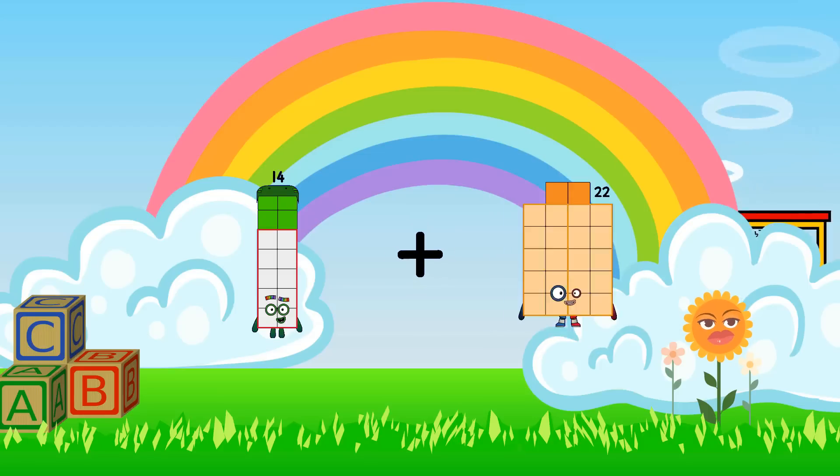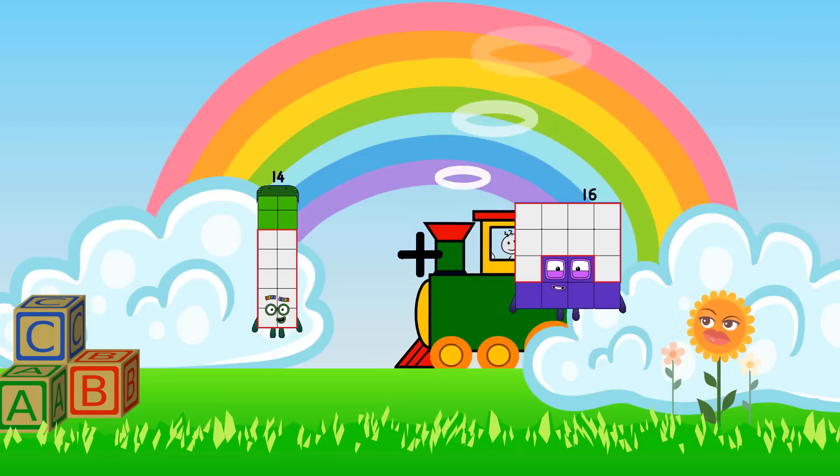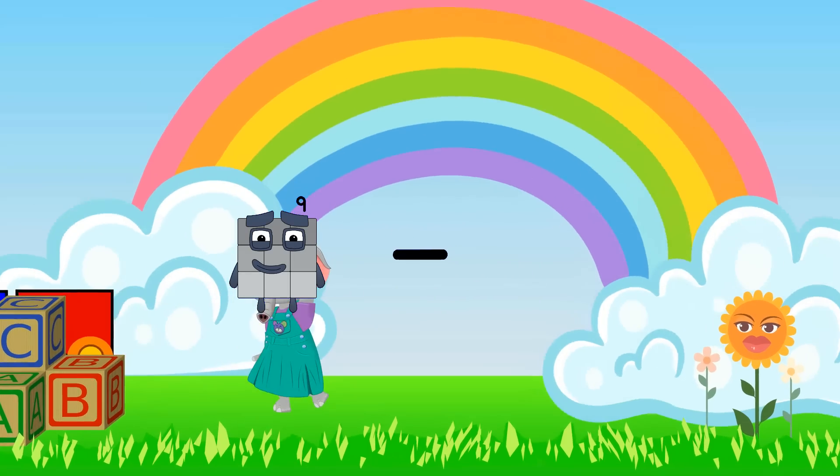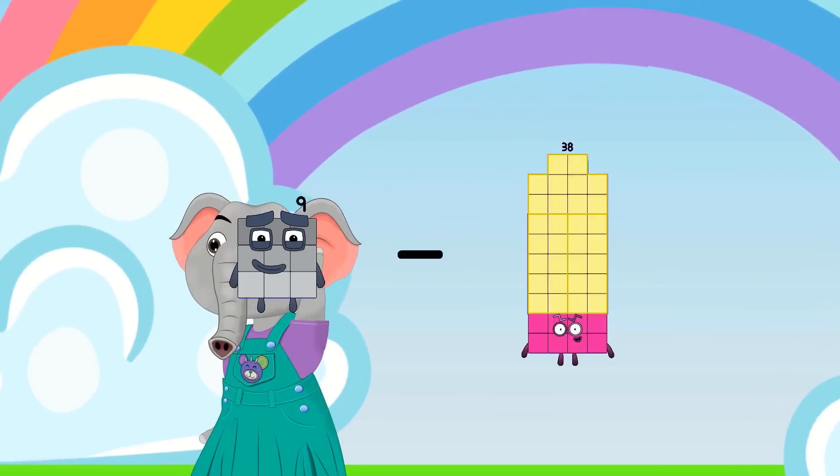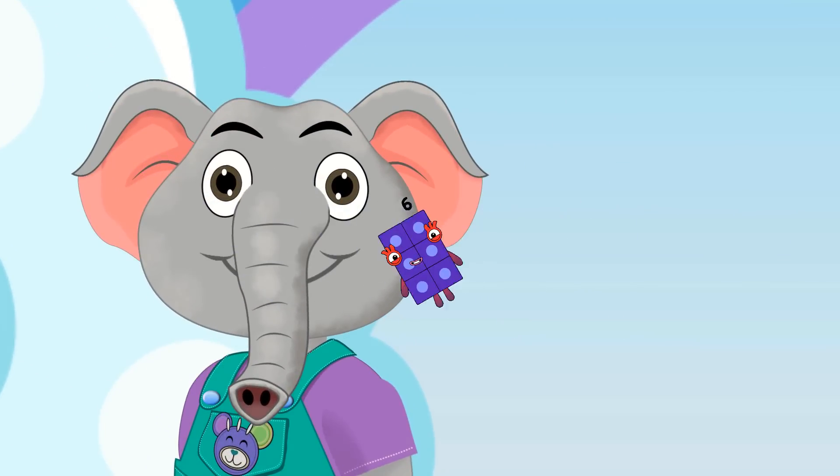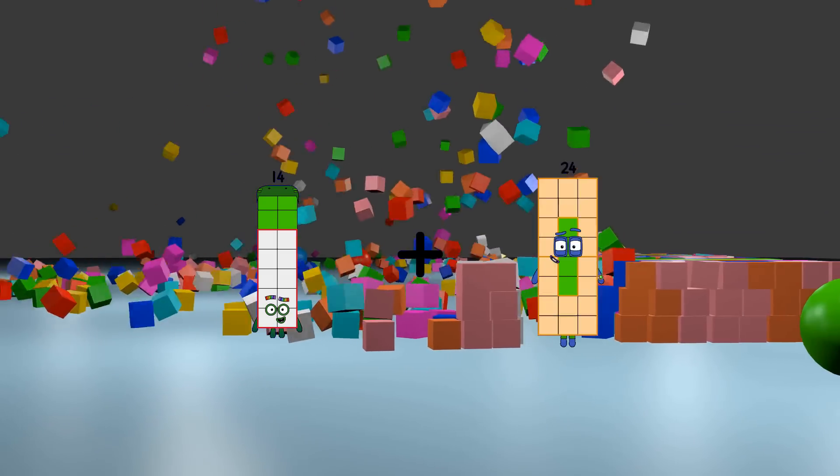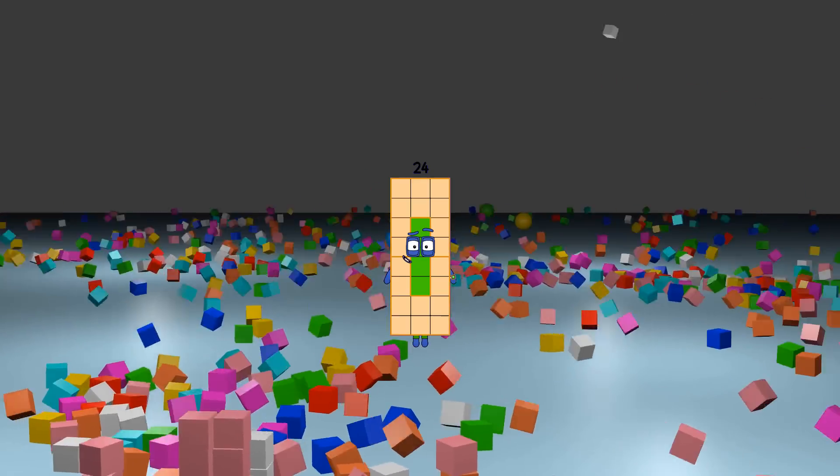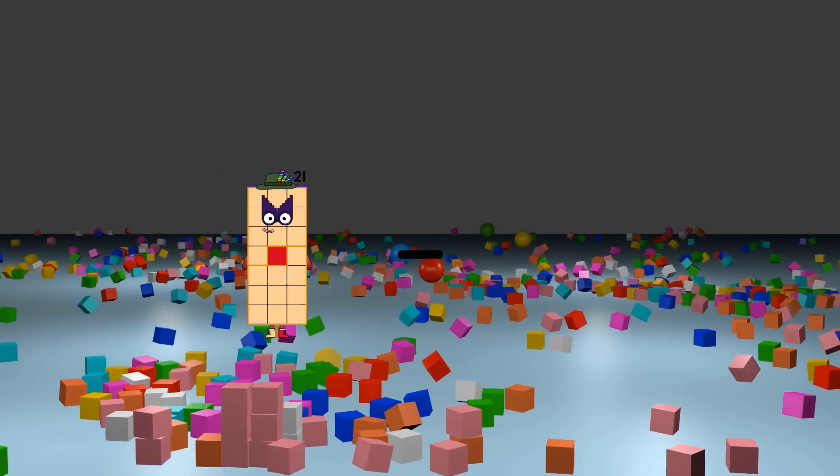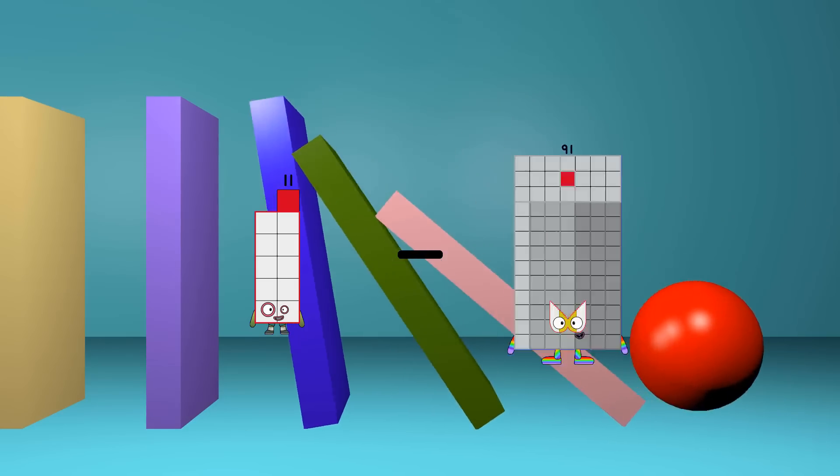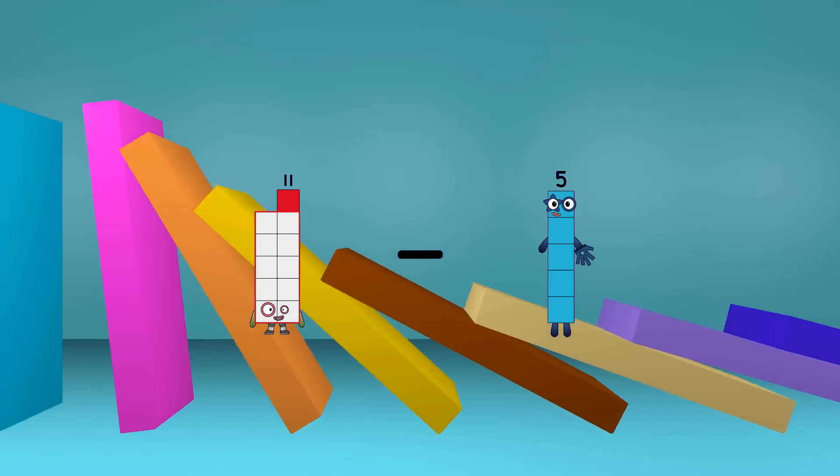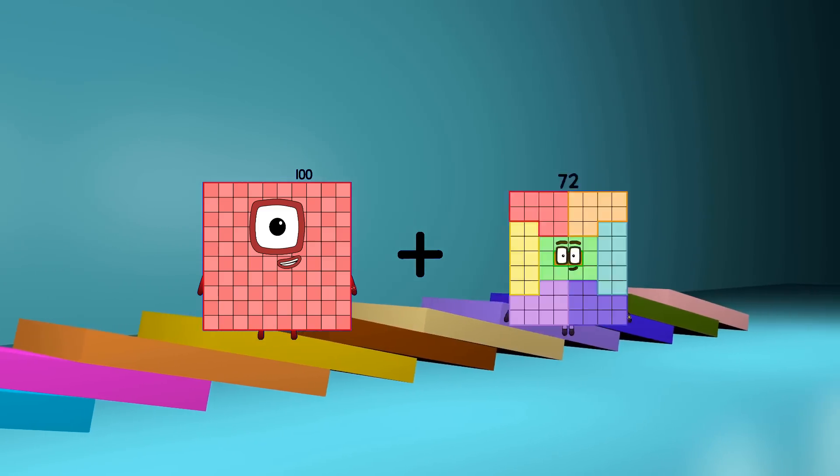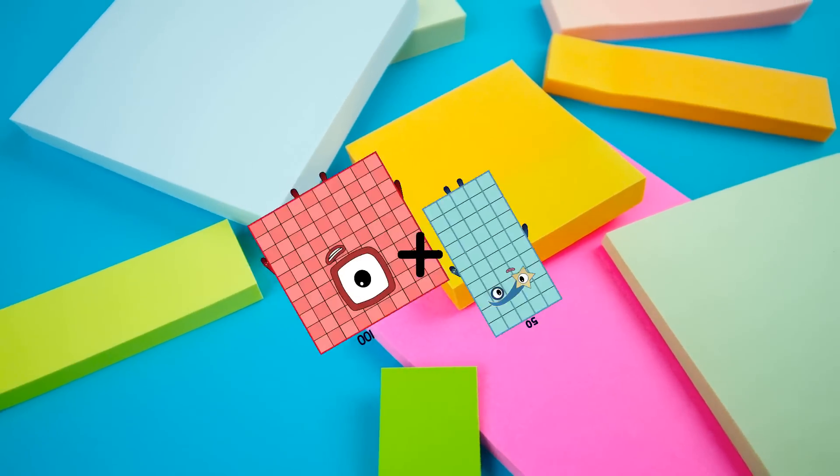14 plus 16 equals. 9 minus 3 equals 6. 14 plus 10 equals 24. 11 minus 5 equals 5. 100 plus 50 equals 150.